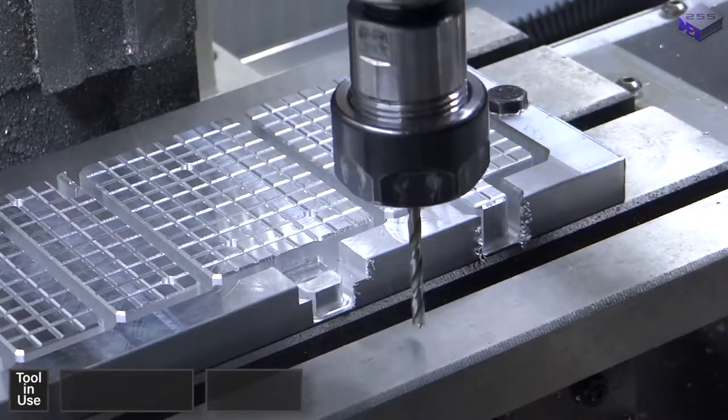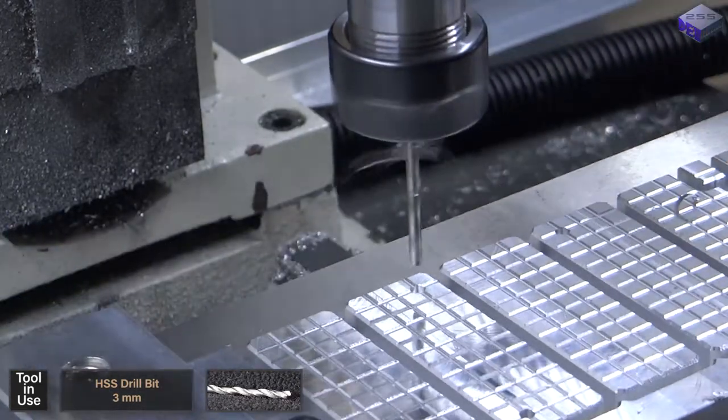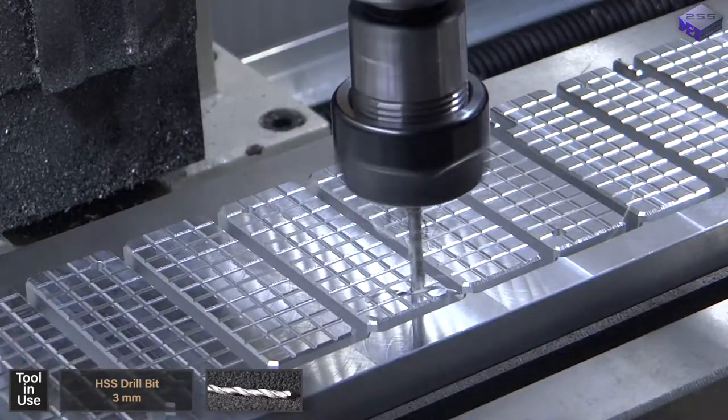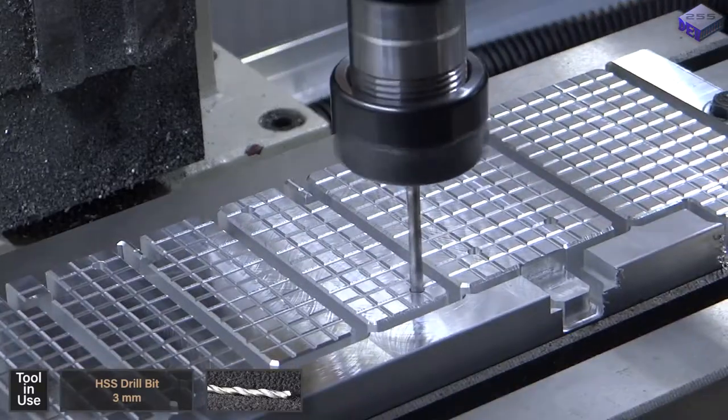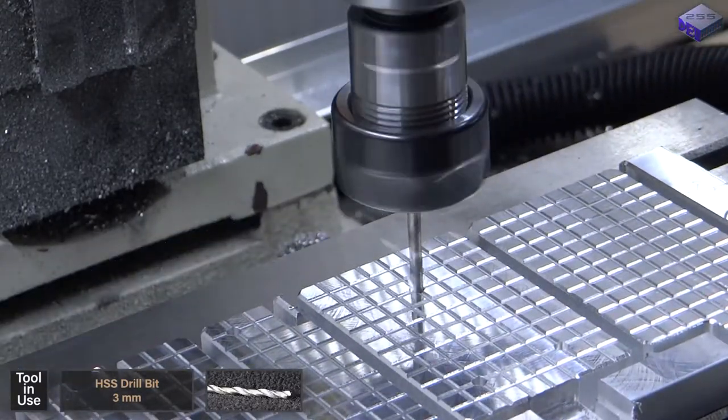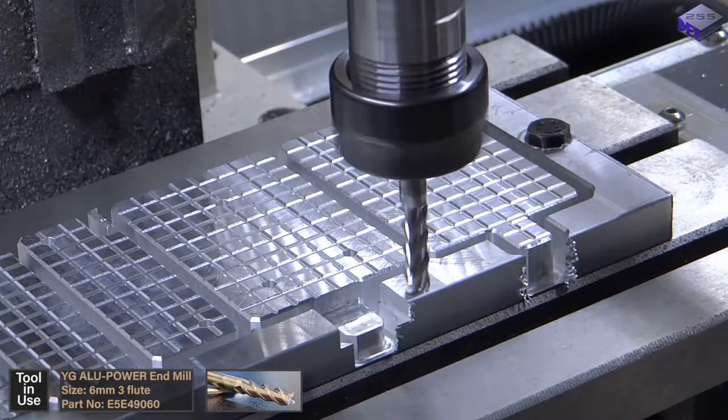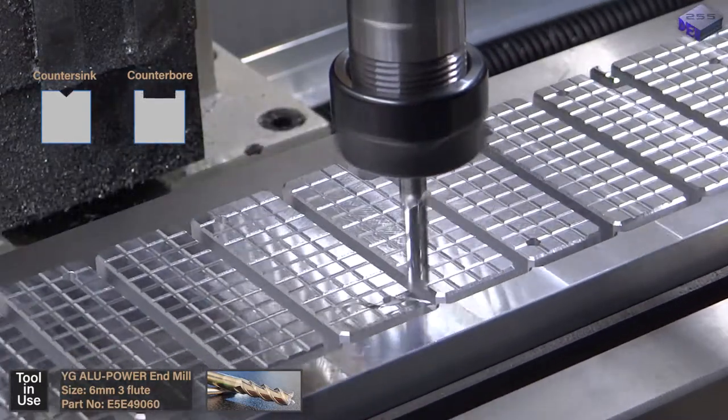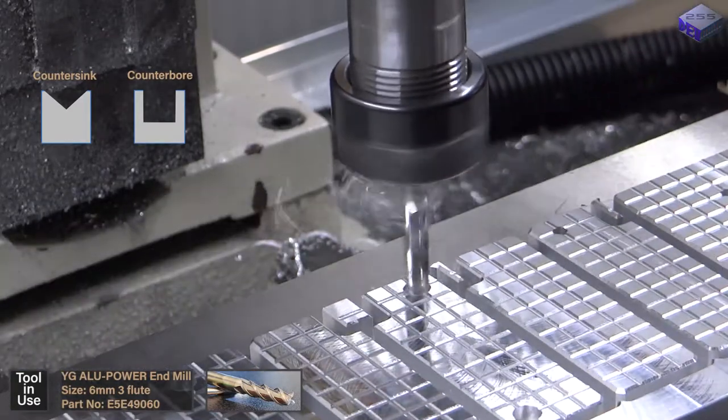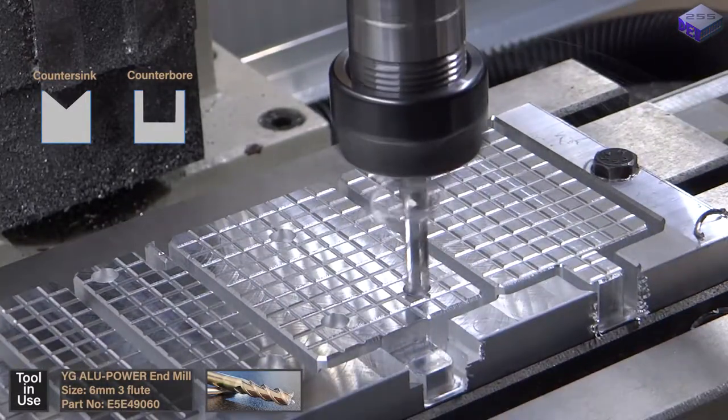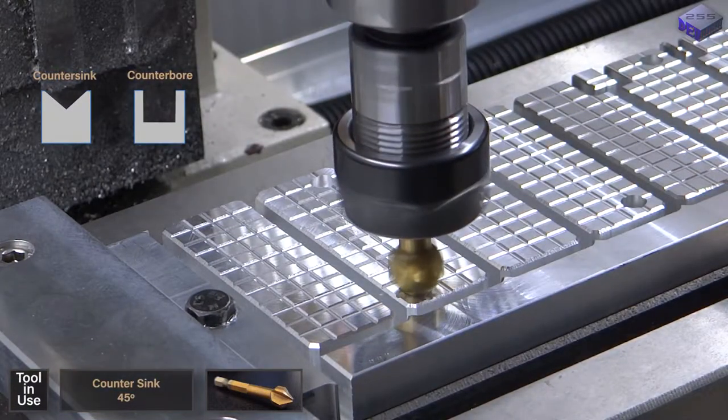Just before drilling all these holes, I'll set up the quill stop, just to make sure that I'm not going to drill into the table. Once I've flipped the part and machined off the back surface, the holes should actually appear. Then it's a case of counterboring each hole so the bolt sits flat, and then countersinking all those holes just to make the edges nice and round and smooth, so there's no sharp edges.